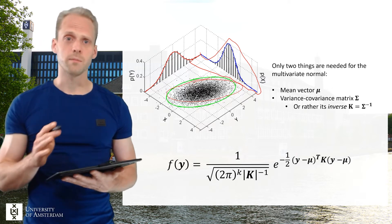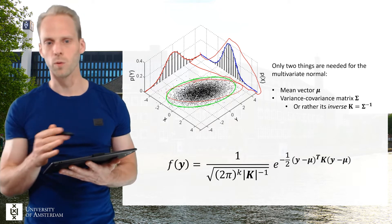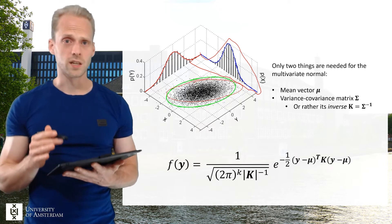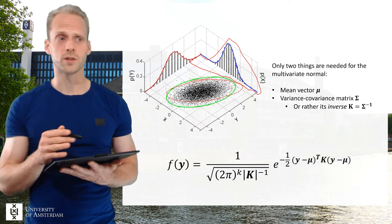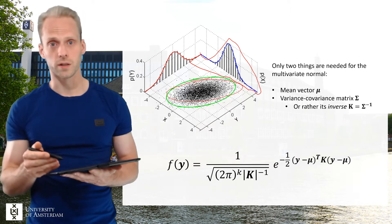It's also what's called a maximum entropy distribution for the first and second order moments, which means that it's the least specific distribution you can assign given a certain set of means and a certain set of variances and covariances.